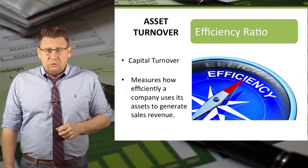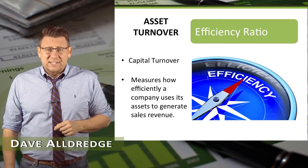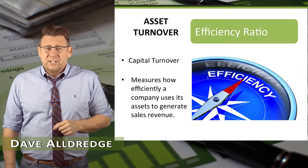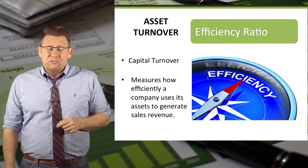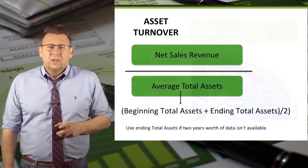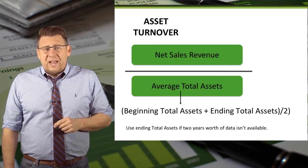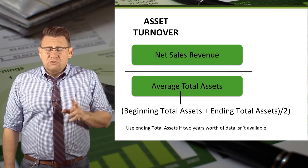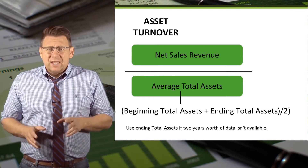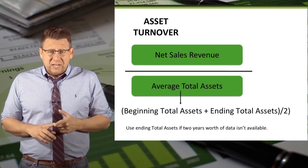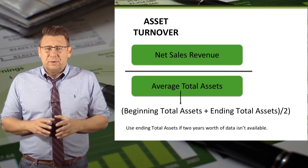The Asset Turnover Ratio measures how efficiently a company uses its assets to generate sales revenue. Asset turnover is a measure of efficiency. The formula is net sales revenue divided by average total assets. Average total assets is calculated by taking the beginning total assets plus the ending total assets and dividing by 2.